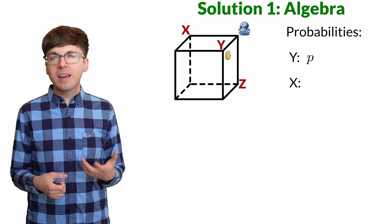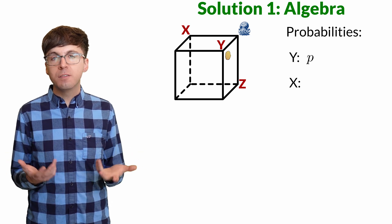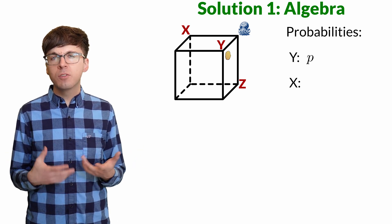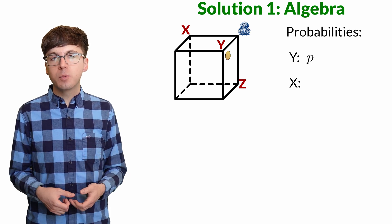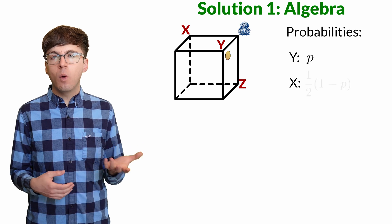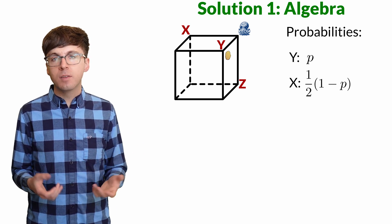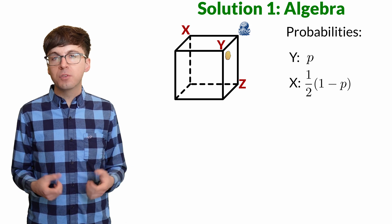When we start with a potato, x and z are both equally likely to feed the monster, since their positions are symmetric when the game starts. So they each split the one minus p probability, which gives them a one-half one minus p probability of feeding the monster. This will be helpful soon.